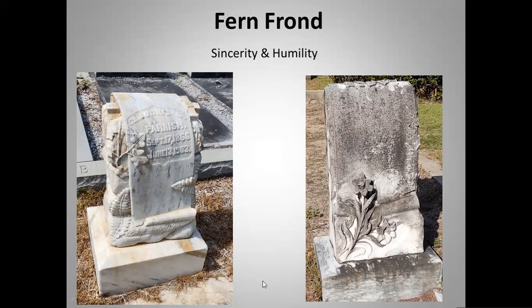A fern frond meant sincerity and humility — you can see it very intricately carved on the stone, along with ivy at the top. On the stone on the right, which has several carvings but a barely readable inscription, you can see fern fronds, ivy at the top and sides, and Easter lilies. You can interpret each of those symbols and learn something about the individual even if you cannot read the inscription any longer.